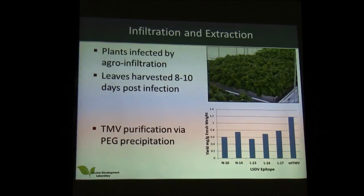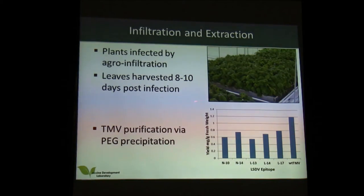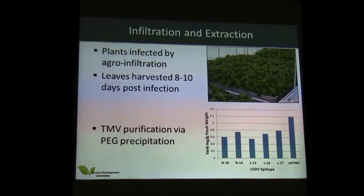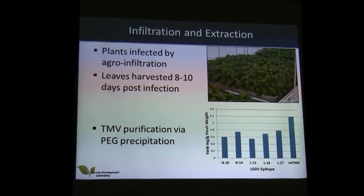After attaching the epitopes to the coat protein, we infiltrated plants — you can see the wrinkling of the leaves which are typical signs of tobacco mosaic virus infection. We extracted the recombinant tobacco mosaic virus and the graph shows the yield per gram of fresh weight. There is a difference in the amount of virus you can extract from each plant because the insertion points of the epitopes play a major role in the amount of vaccine or virus you can finally extract.